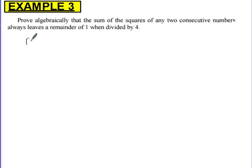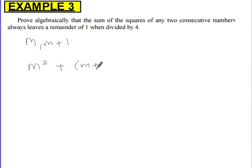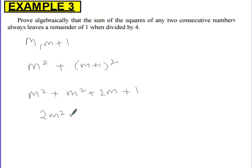So with consecutive numbers m and m plus 1, we need to square both terms. We're looking at m squared plus (m + 1) squared. Expanding: m squared plus m squared plus 2m plus 1. We end up with 2m squared plus 2m plus 1.